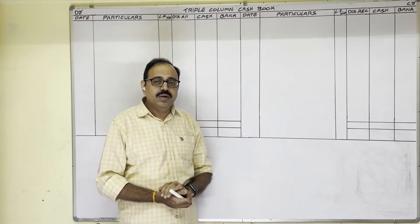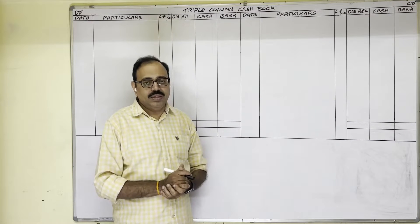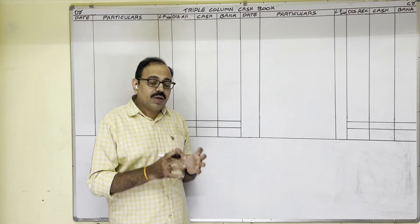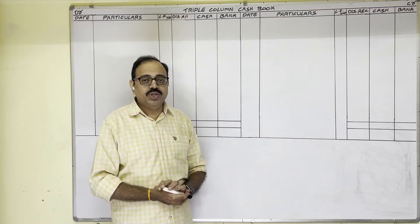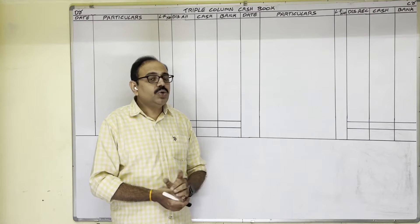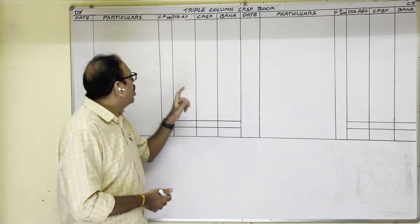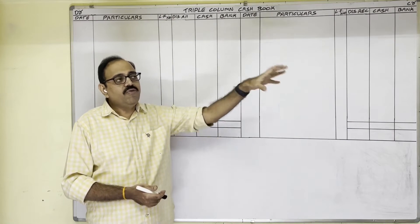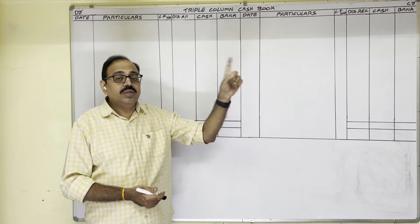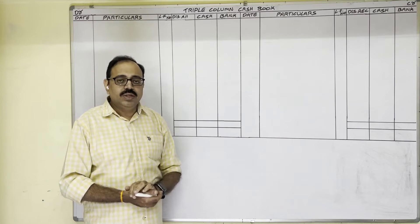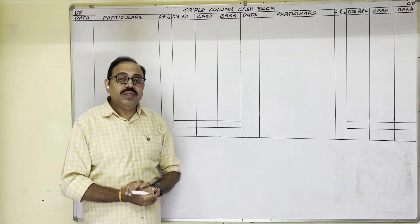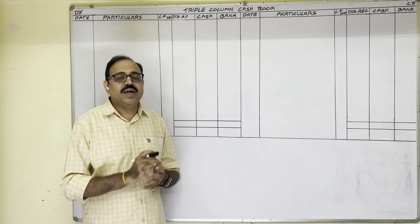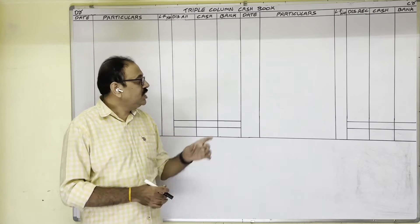The first two sentences in the question give opening balances: cash at bank and cash in hand. Cash in hand is the cash balance in the firm's cash box on the starting date of the month — it is an asset. Since assets show a debit balance, opening cash balance is always written on the debit side. Cash at bank means the balance in the firm's bank account at the start of the month — a favorable bank balance, also an asset. Therefore bank balance is also written on the debit side. The remaining sentences are transactions.